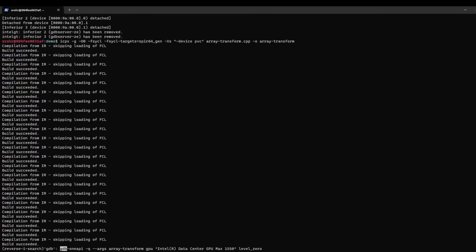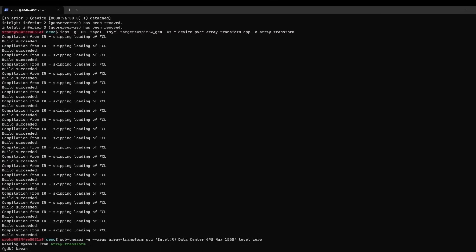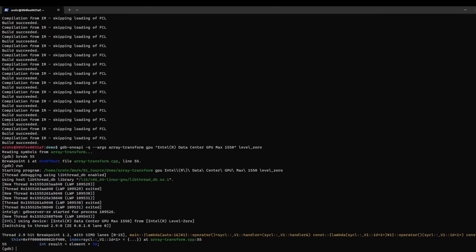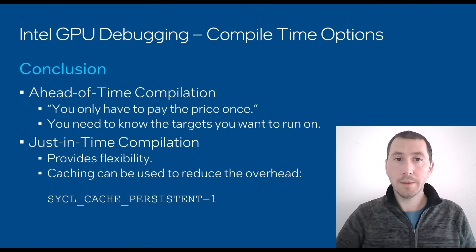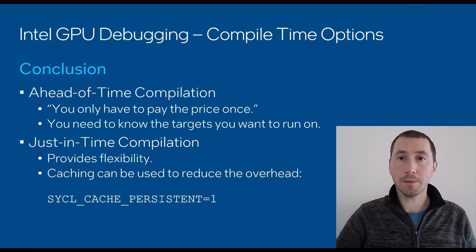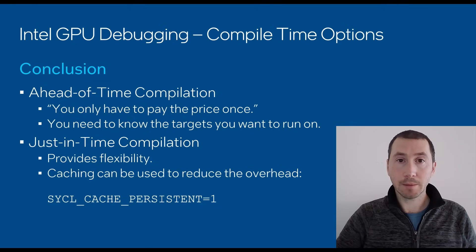Let's do the debugging session again. Breakpoint at line 55. Again we can hit. In this video we learned about the differences between just-in-time and ahead-of-time compilation. We used the array-transform example from the OneAPI samples repository to generate JIT and AOT-compiled binaries.